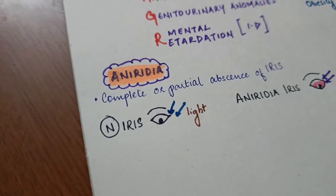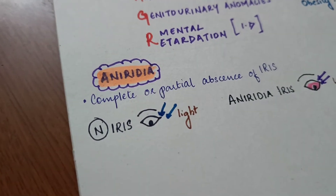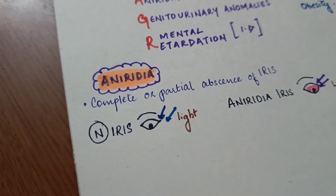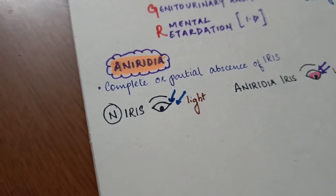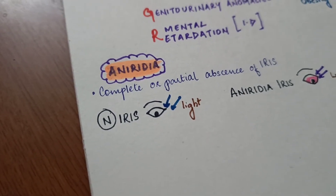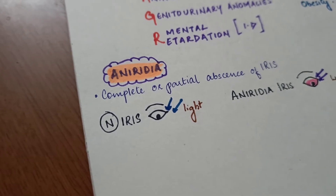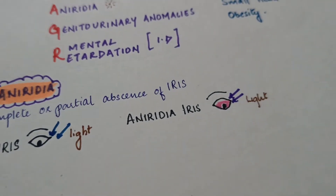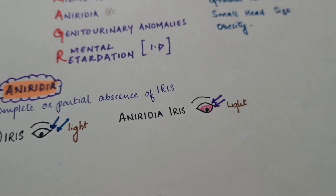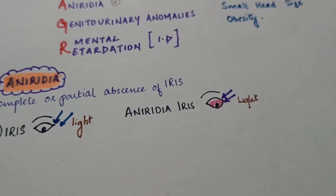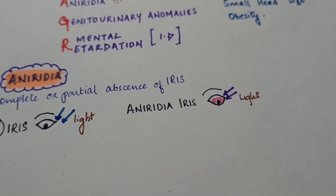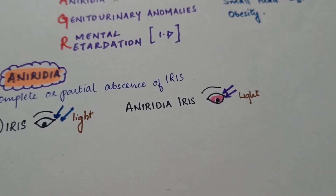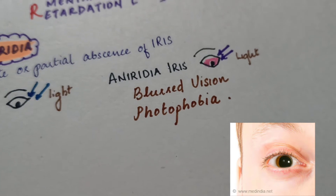In normal eyes, the iris controls how much light enters and constricts the pupil to keep vision sharp. But in aniridia, the iris is absent, so too much light enters the eye, leading to blurred vision and photophobia.